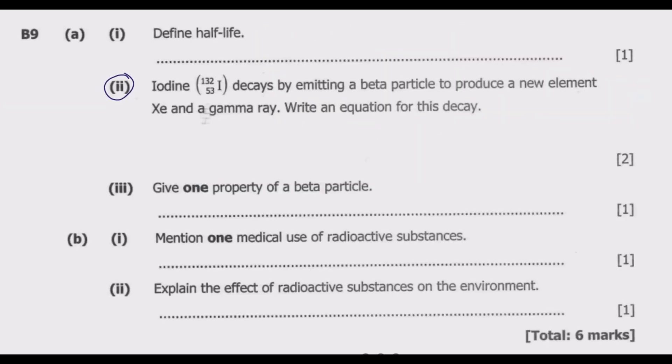Part 2, iodine 132 decays by emitting a beta particle to produce a new element, Xe and a gamma ray. Write an equation for this decay. So basically we are starting with iodine